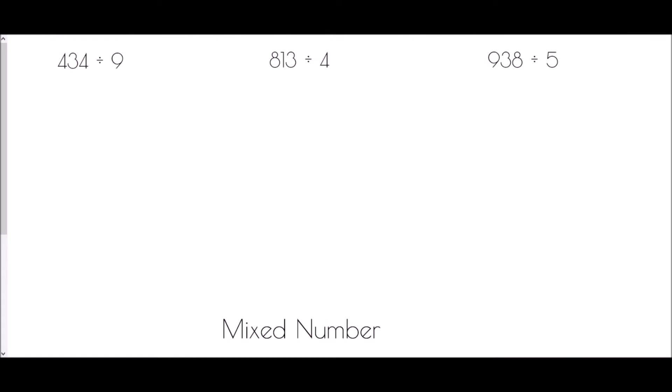So how do we make it a little bit more accurate? Well, a better way may be to use a mixed number. So a mixed number would be a whole number with a fraction afterwards. And so let's see how we can do that for 434 divided by 9.